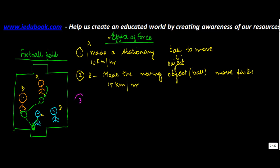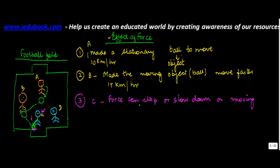The third impact happened when C, who is this player, stopped the ball. He applied force on the moving ball which was going towards the goal post and he stopped it — or maybe he could have slowed it down. So force can stop or slow down a moving object.